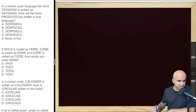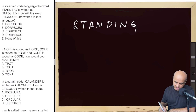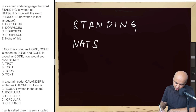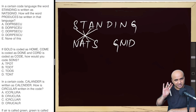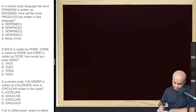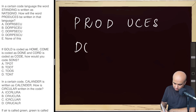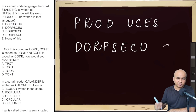Second coding question: In a certain code language, STANDING is written as N-A-T-S-G-N-I-D. The first four letters are reversed (S-T-A-N → N-A-T-S) and the last four letters are also reversed (D-I-N-G → G-N-I-D). Applying the same logic to PRODUCES: the first four letters P-R-O-D reversed give D-O-R-P, and the last four S-E-C-U reversed give U-C-E-S. So the answer is D-O-R-P-U-C-E-S, and option C is the right answer.